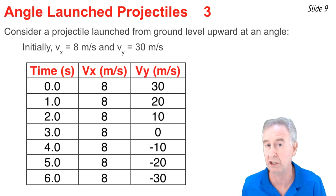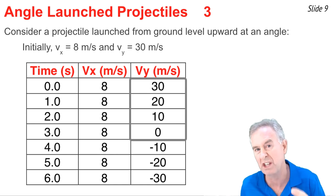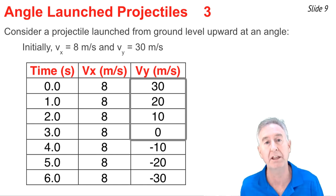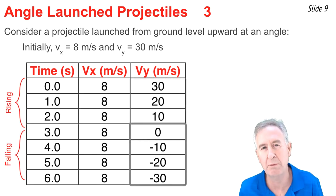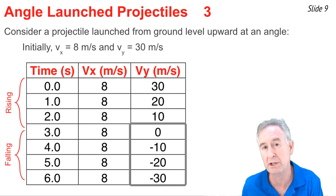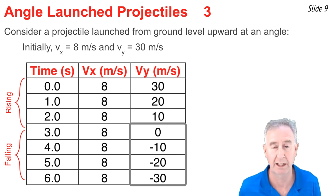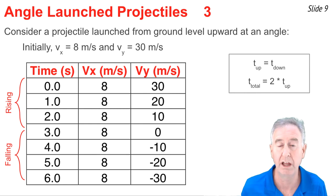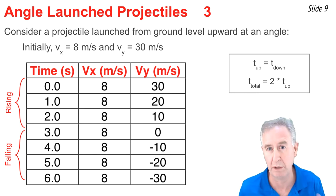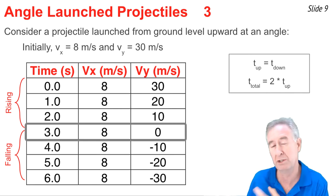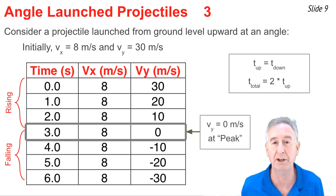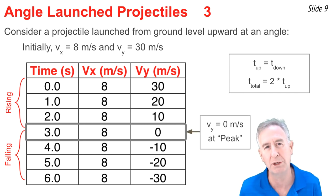Looking at the table, in the last column the VY values are changing by negative 10 meters per second each second. For the first three seconds, the Y velocity is positive — the object is moving upwards — and it takes three seconds to go from 30 meters per second to zero. That's the time to rise. It then takes three more seconds to fall from zero to negative 30 meters per second. The time to rise equals the time to fall. At three seconds, VY equals zero — that is the peak location, the highest point on the trajectory.